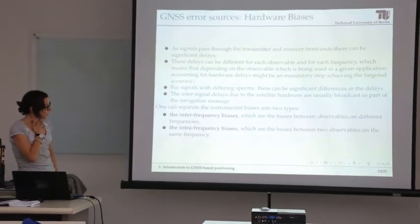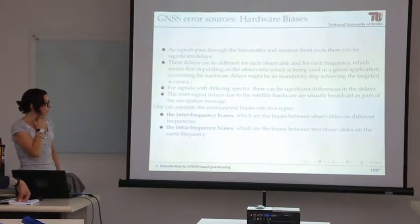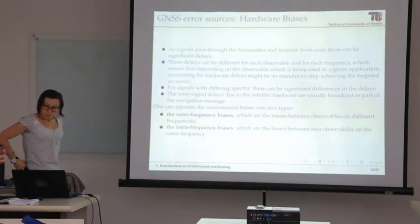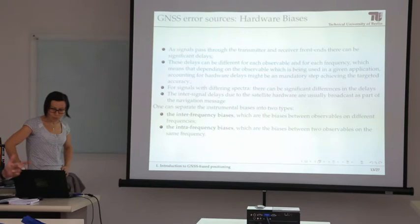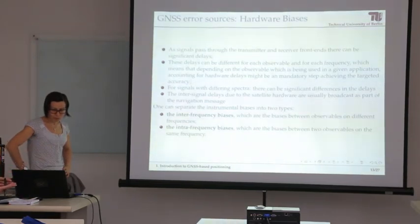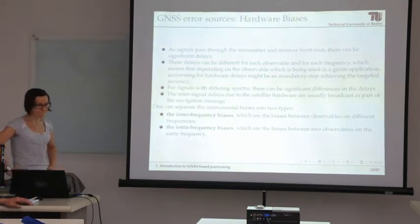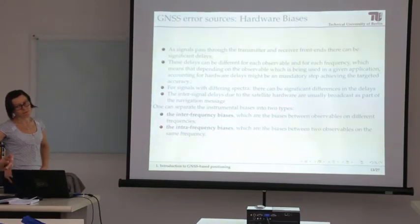Something important about hardware biases is that they are highly related to the ambiguity number — the integer ambiguities of the signal — contributing to greater ambiguity and less certainty in the integer number of signal cycles. The instrumental bias can be separated into two classes: inter-frequency bias, generated between L1 and L2 frequencies from the satellite, and intra-frequency bias — for example, within the L2 signal, both the P code and CA code are traveling, and interference can occur between them within the same signal.